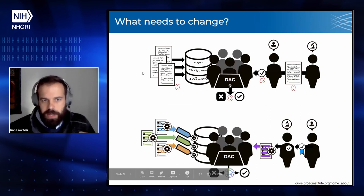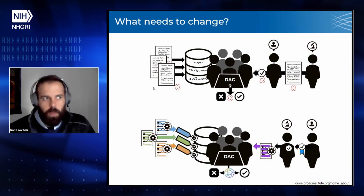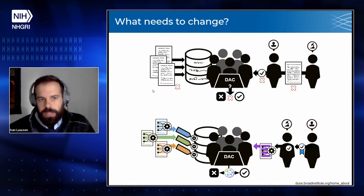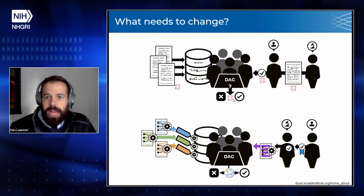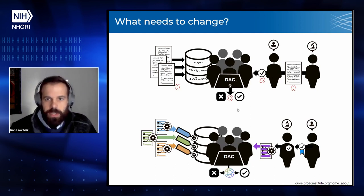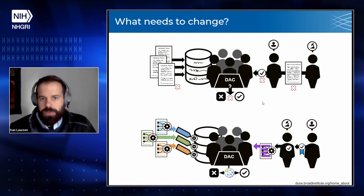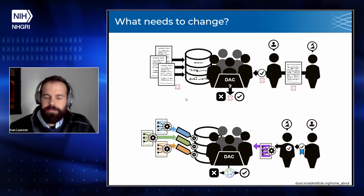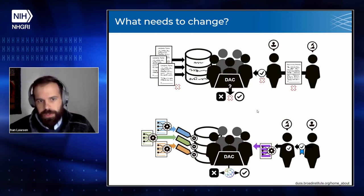I want to look at the data access request process as it stands and compare it to what we hope to do. Going from the left of the top diagram, data and its future use is governed by the data use permissions put in consent forms. That data use is then aligned with the data wherever it's stored in a repository, so that a DAC can help manage data access decisions. Researchers submit a data access request in narrative form, approved by their signing official, and then submitted to the DAC. What's complicated is that signing officials need to review every single request, and the DAC must compare consent forms and data use terms — which may be complicated — with a narrative description of research not written to be easily comparable with those data use terms, making that decision difficult.